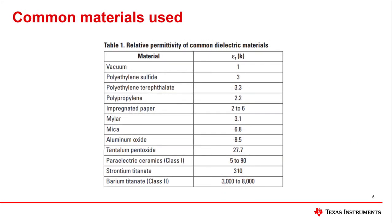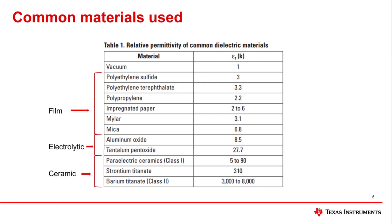Here is a chart of commonly used dielectric materials. These materials can be broken down by what type of capacitors they are used for. The first six are usually found in thin film capacitors, showing how low the K values used are in comparison to the other three types, especially that of class two ceramic capacitors.